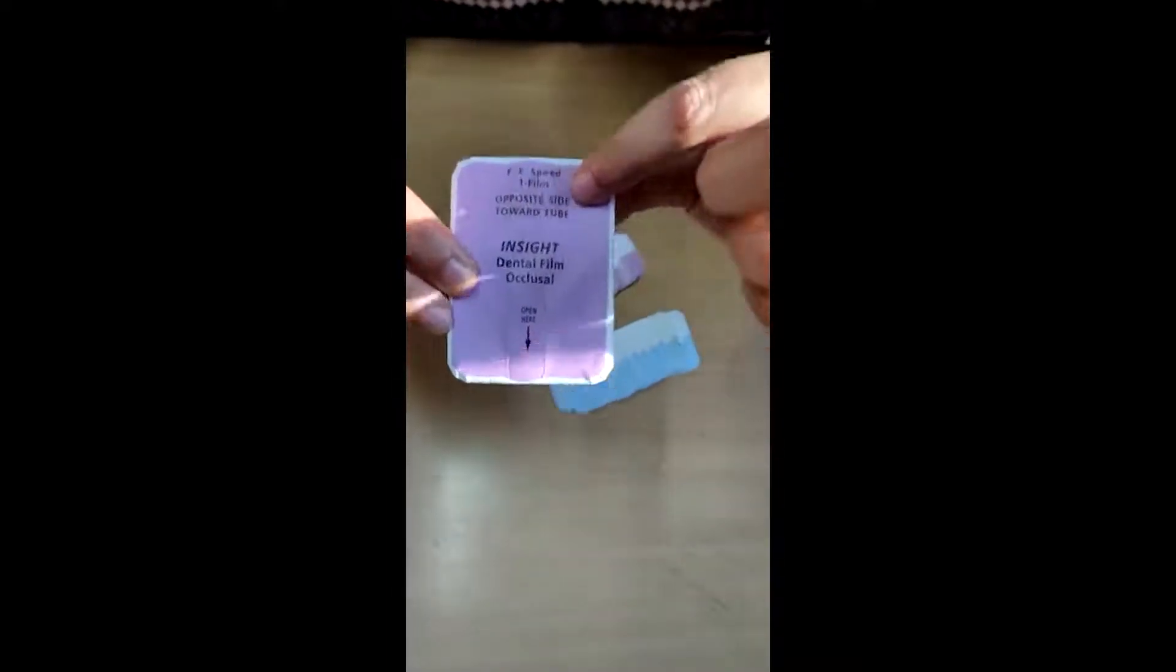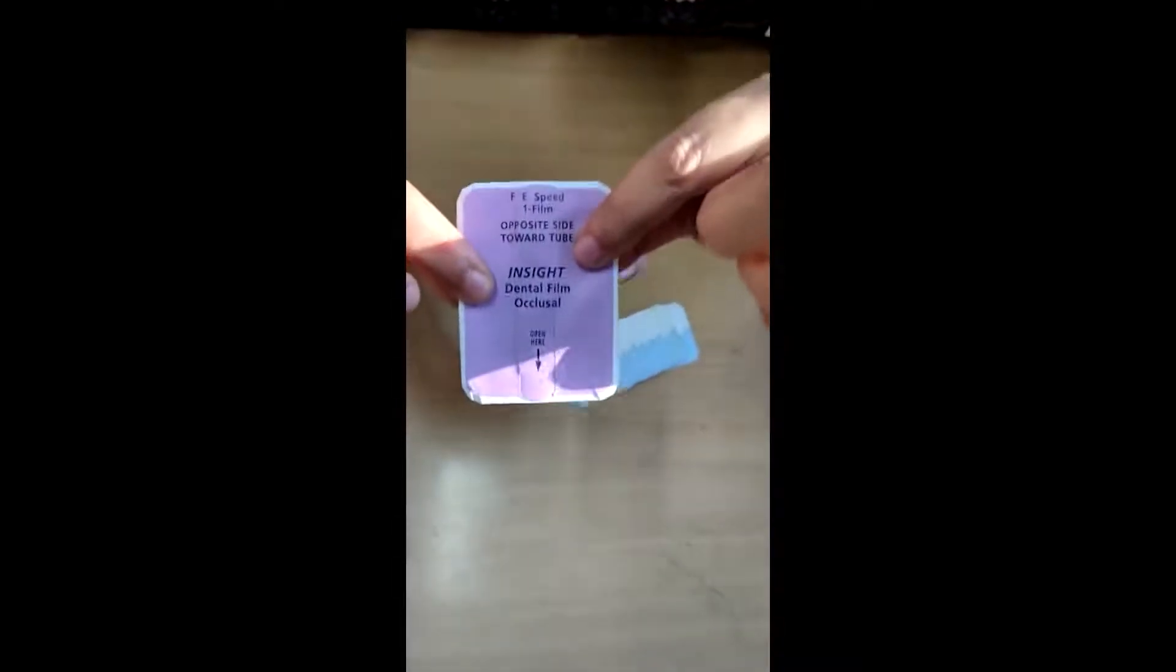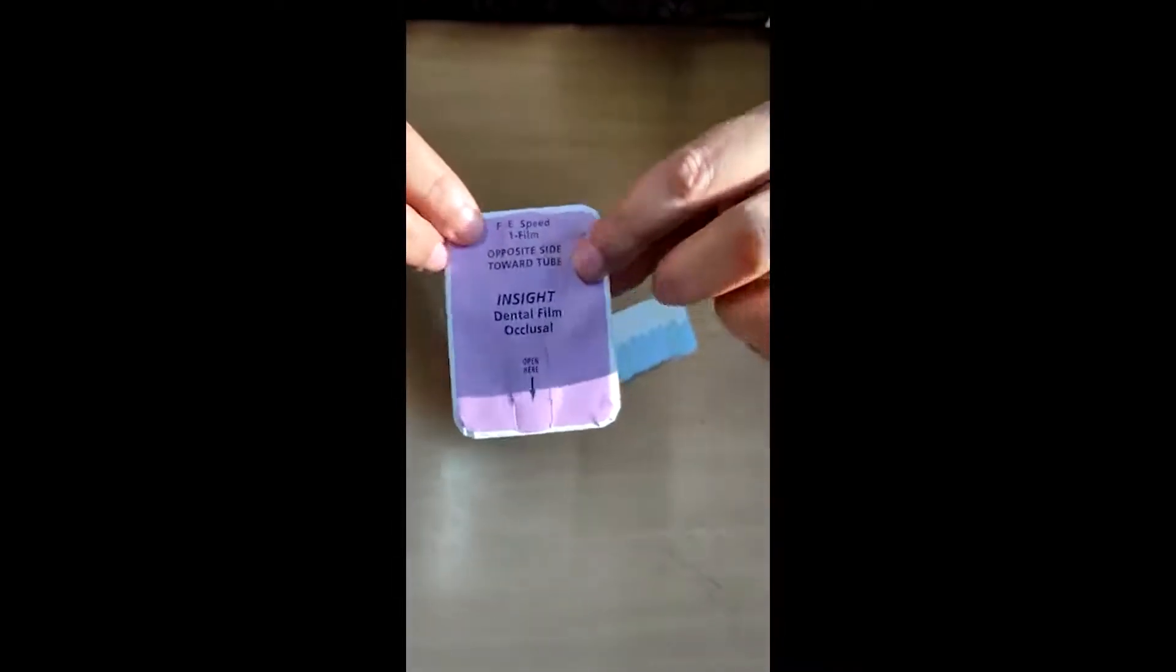Why is it written one film? Some film packets contain two films for duplication, but the films which we are using right now are containing one film only.